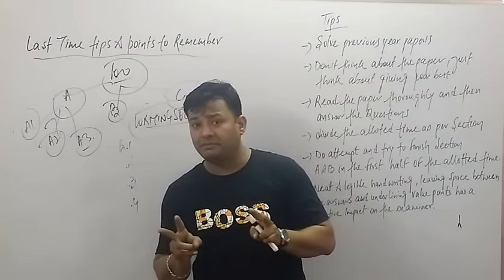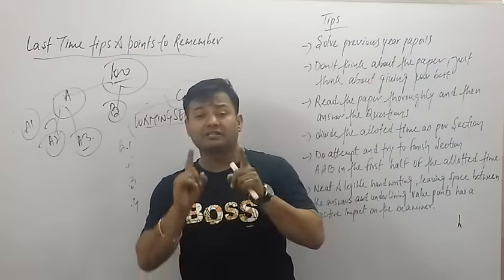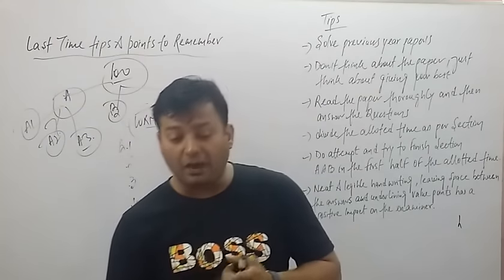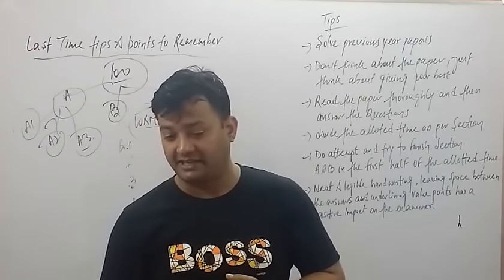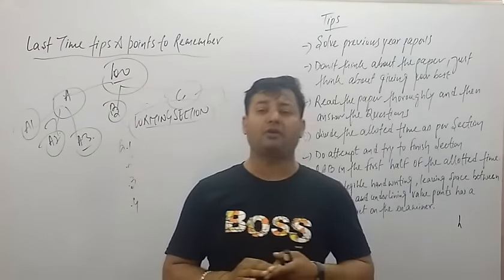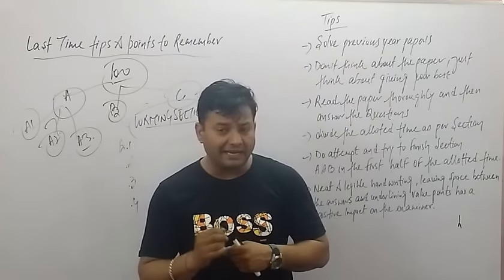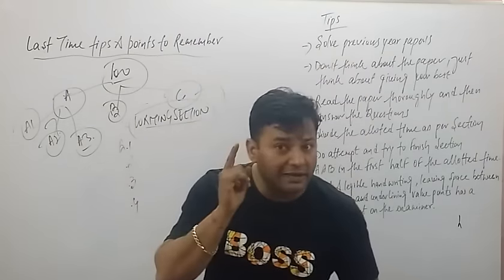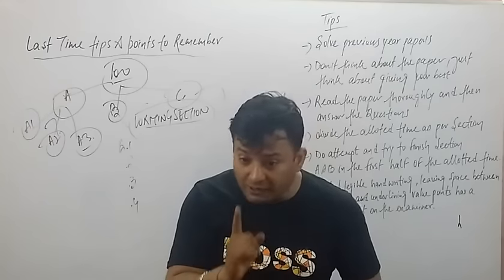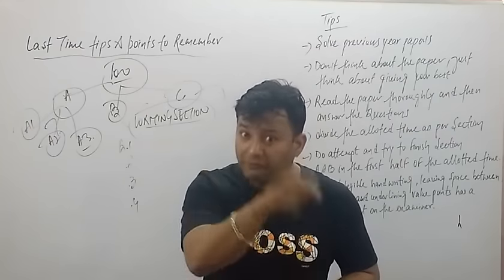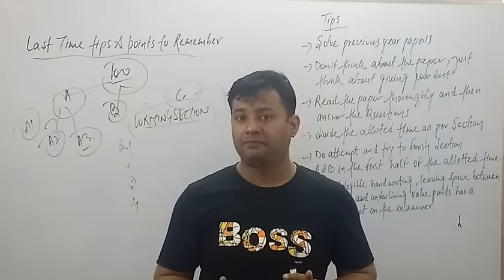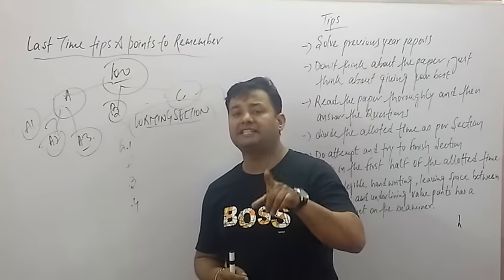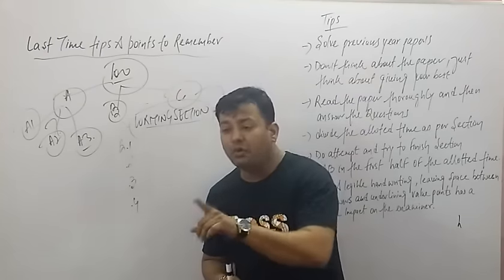I repeat: for Section B, you need A, B, C — accuracy, balance, and consistency. How can you master these? Write in a flow. Don't think while you write — think before you write. If you are thinking while writing, you are making adjustments, and adjustments will not give you the highest marks.